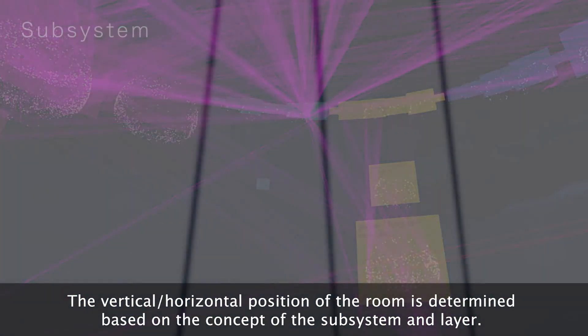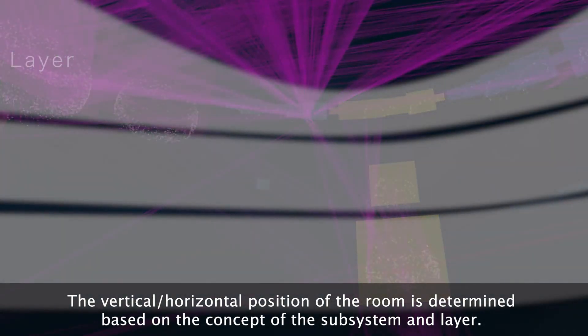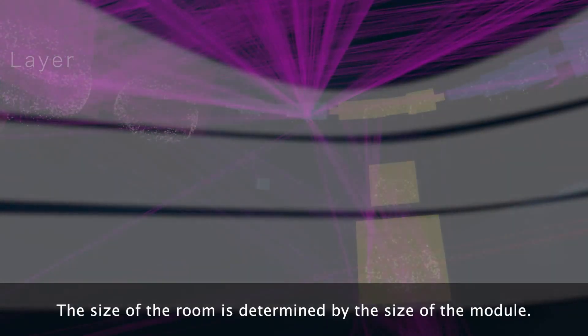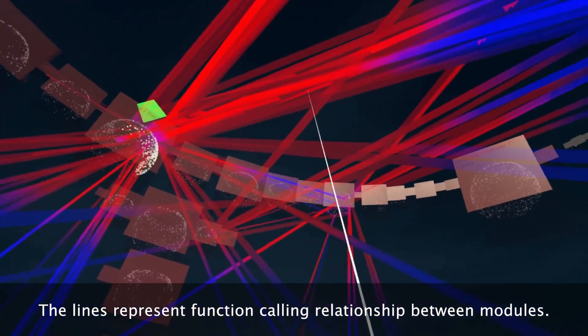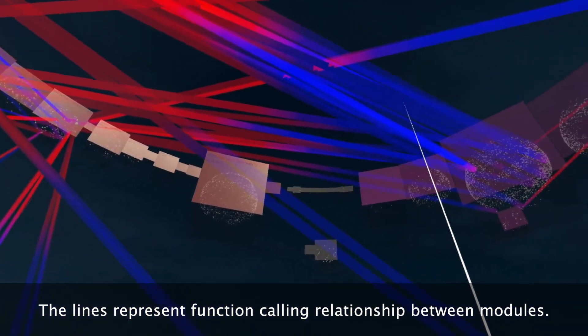The vertical, horizontal position of the room is determined based on the concept of the subsystem and layer. The size of the room is determined by the size of the module. The lines represent function calling relationship between modules.